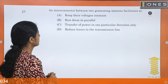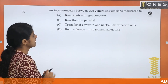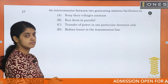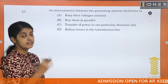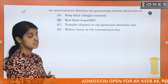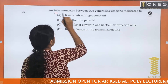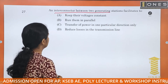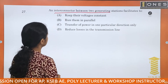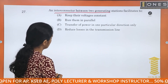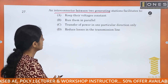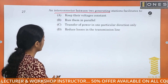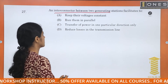An interconnector between two generating stations facilitates: keeping their voltage constant, running them in parallel, transfer of power in one particular direction, and reduces losses in transmission.